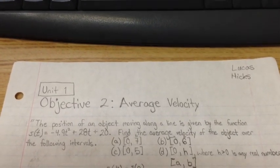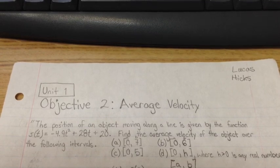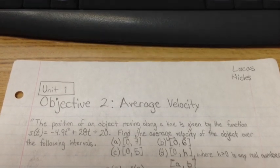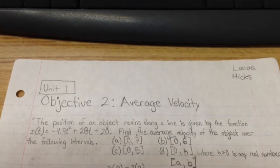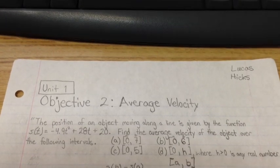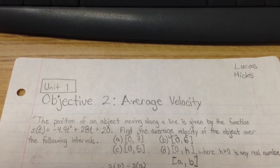So the problem is the position of an object moving along a line is given by the function S(t) = -4.9t² + 28t + 20. Find the average velocity of the object over the following intervals, and those are the intervals.